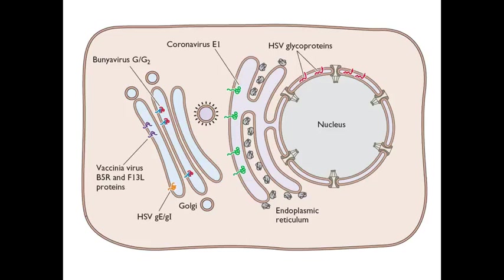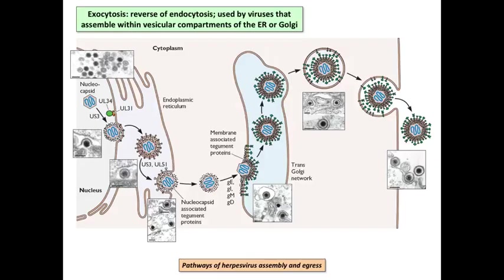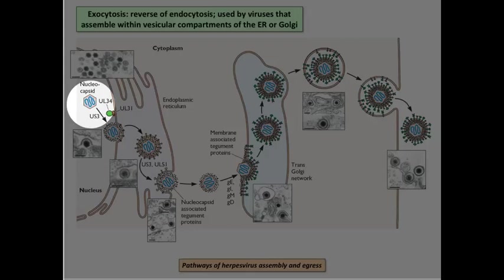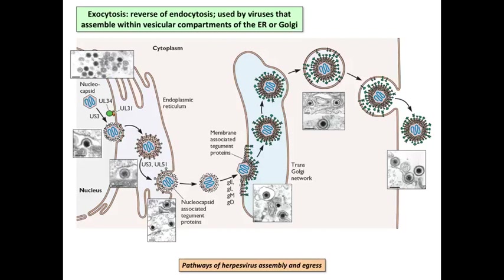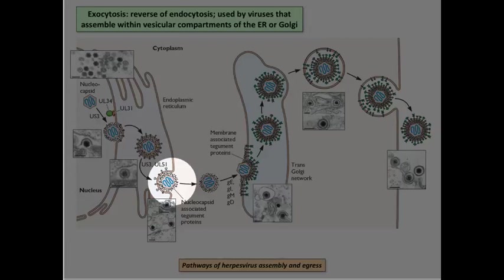Viruses can bud in many cellular compartments. We have talked about budding from the plasma membrane, but some viruses can bud from the Golgi and from the ER as well. Here's an example of what herpes virus does — it takes budding to the extreme. The particle is formed in the nucleus; the DNA is taken up into the capsid, then it buds out of the nucleus — not through the pore — and acquires a membrane, finding itself in the ER.